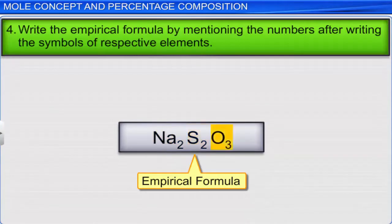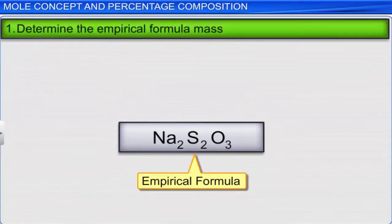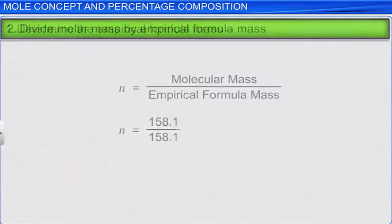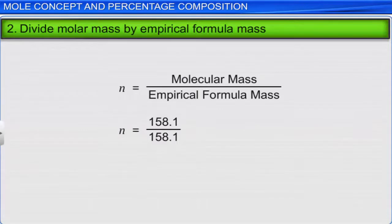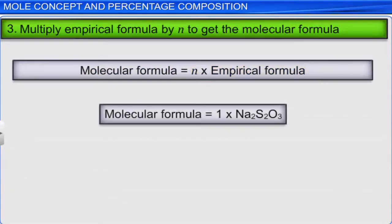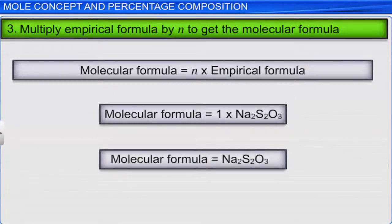Now, let's determine the molecular formula. First, we calculate the empirical formula mass by adding the atomic masses of all the atoms present in the empirical formula, which is 158.1 grams. We then divide the molar mass by the empirical formula mass to identify the value of N, which we get as 1. Thus, the molecular formula is determined by multiplying the empirical formula by N. In this case, the molecular formula is the same as the empirical formula: Na₂S₂O₃.